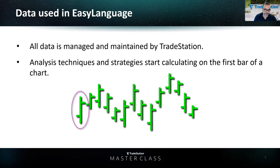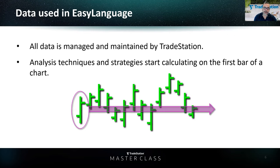Analysis techniques and strategies, once created and put on the chart, all start calculating on the first bar that gets loaded. This depends on the amount of historical data you put on a chart — if you put in two years of one-minute data, the study will use all that data. Whatever is loaded onto the chart, the study will use it starting on the very first bar going forward, bar by bar, calculating your formulas one at a time. Once it reaches the current bar, your study or strategy will update tick by tick.